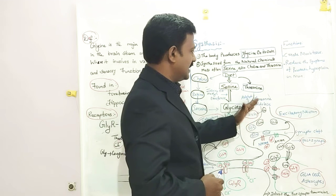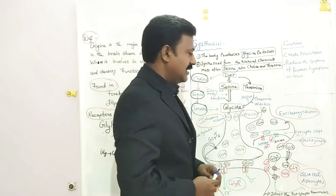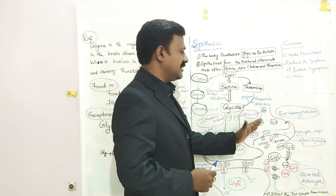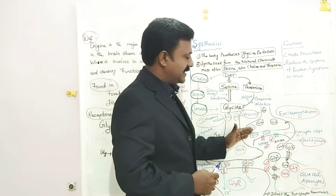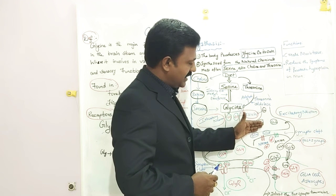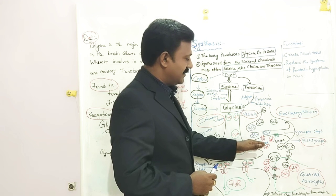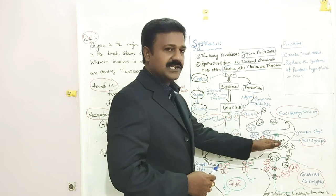Whereas in excitatory neurons, Glycine acts as a co-agonist with glutamate neurotransmitter. So they bind with the receptors, NMDA receptors and AMPA receptors.